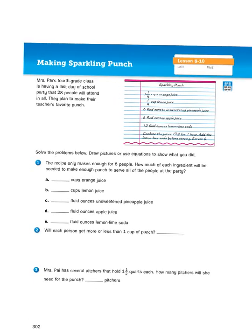It says Mrs. Pye's 4th grade class is having a last day of school party that 28 people will attend in all. They plan to make their teacher's favorite punch. Now let's take a look at that first story problem that relates to this recipe. It says the recipe only makes enough for 6 people. How much of each ingredient will be needed to make enough punch to serve all of the people at the party?